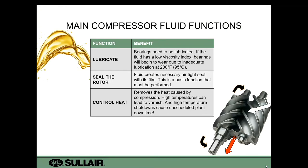There are three main functions of a compressor fluid — three main things it must do when it's in the machine. Number one is to keep your bearings lubricated, which is very important to avoid bearing wear. Next is to seal the rotor; without compressor fluid, you wouldn't create an airtight seal — it needs that fluid film to compress. Third, you need to control the heat. A lot of heat is caused by compression of the air, and we want to dissipate that and keep temperatures under control, because high temperatures — once you push above 200 degrees Fahrenheit — can cause issues with viscosity and shorten fluid life.